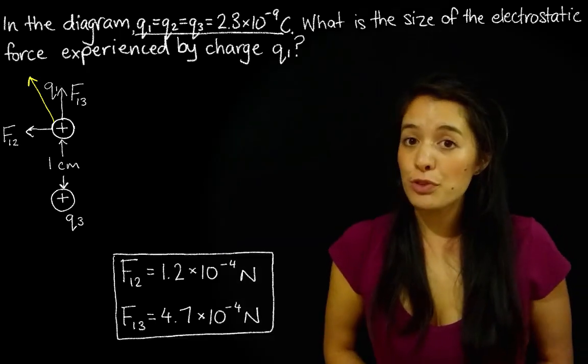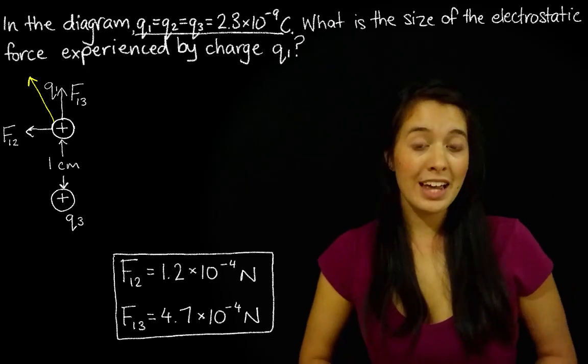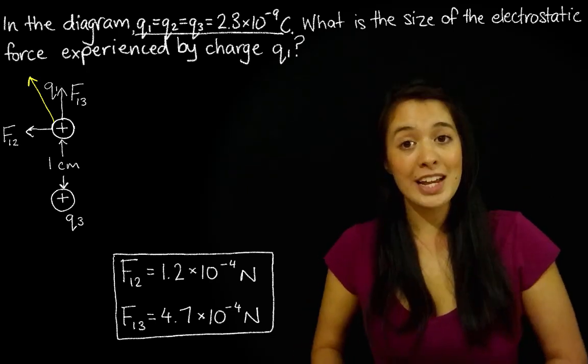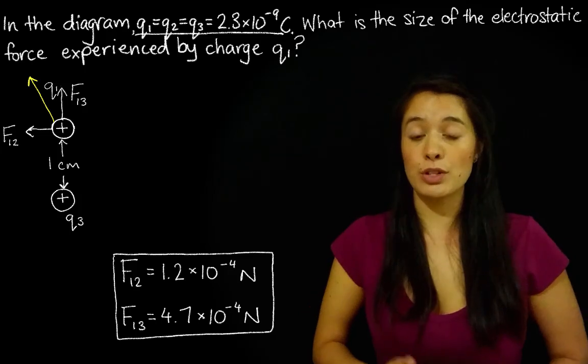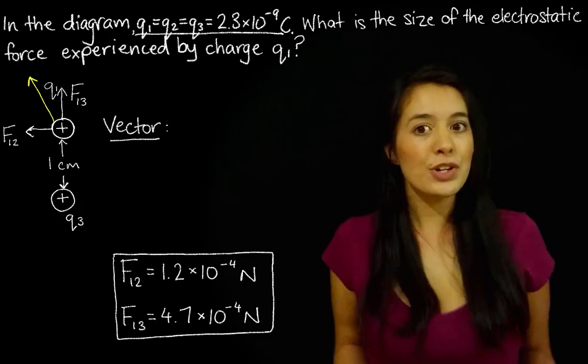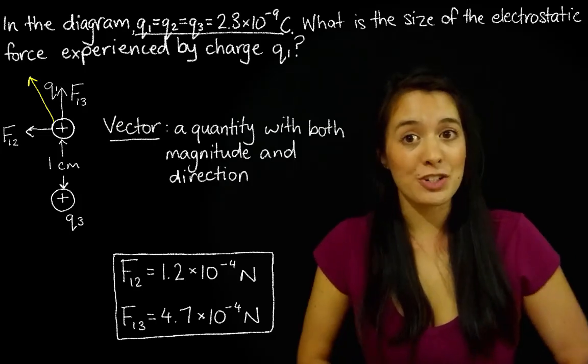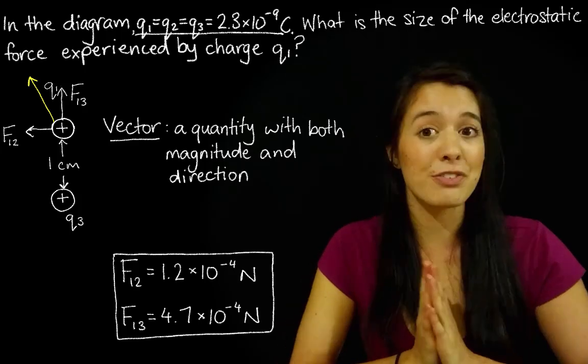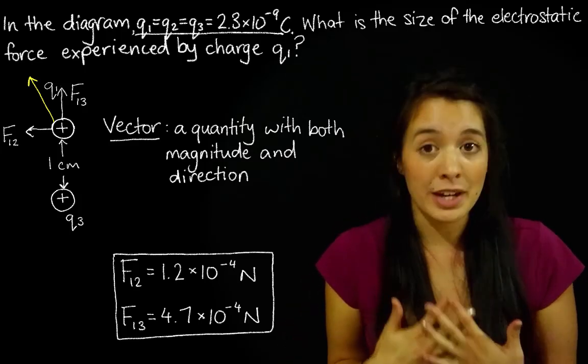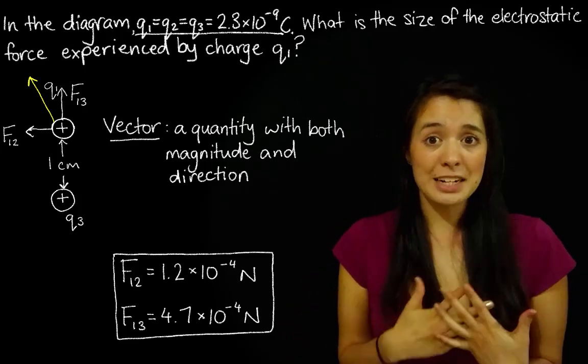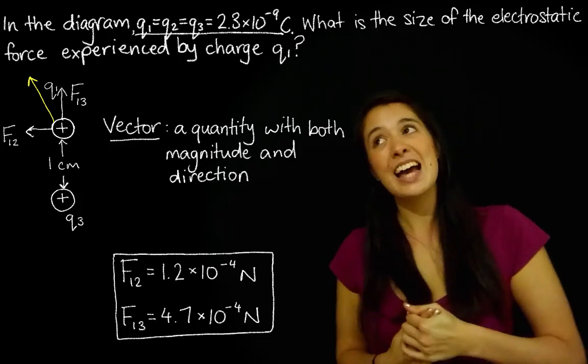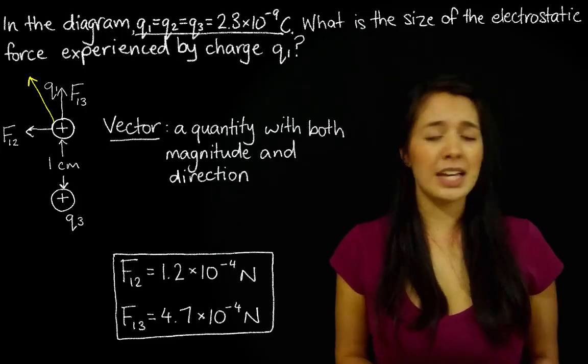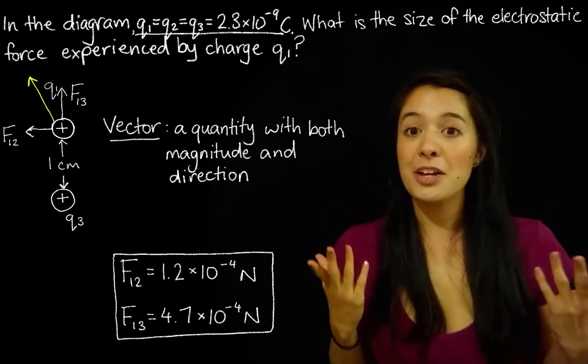So to find the overall force experienced by Q1, we need to add F12 and F13 as vectors, because of course, a force is a vector. So if you don't know what a vector is, or how to do vector addition, I would really recommend you find out. I didn't know what vectors were when I first started my physics degree, and it made things pretty complicated. I could not figure out why I kept getting everything wrong. But anyway, enough about me.